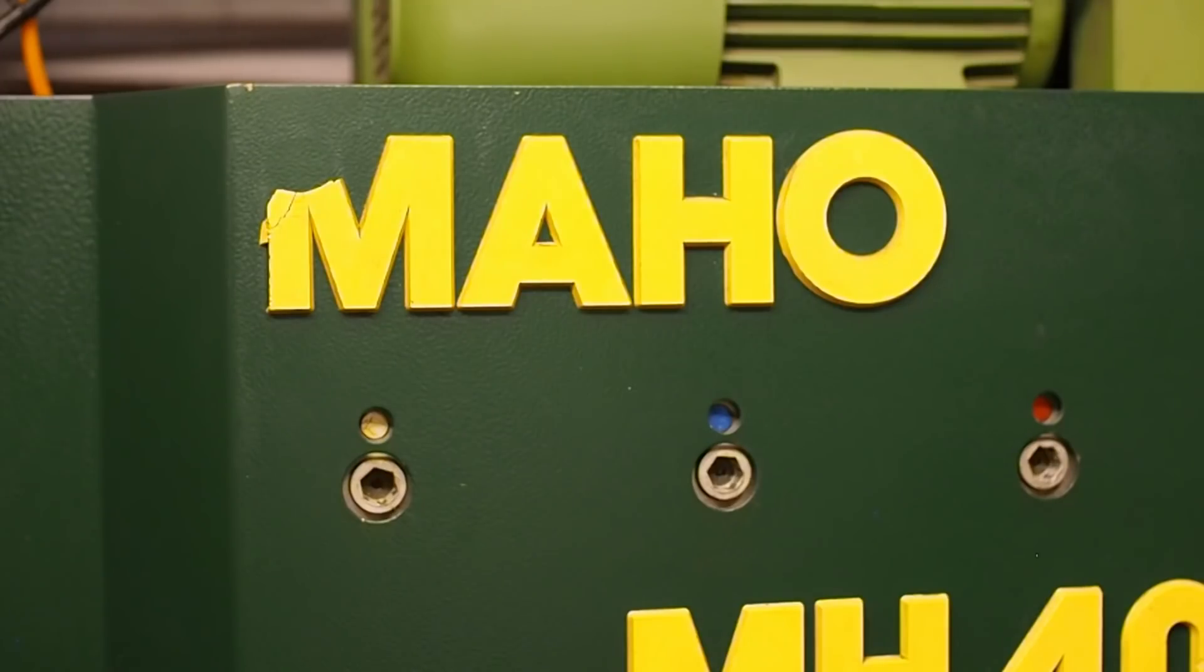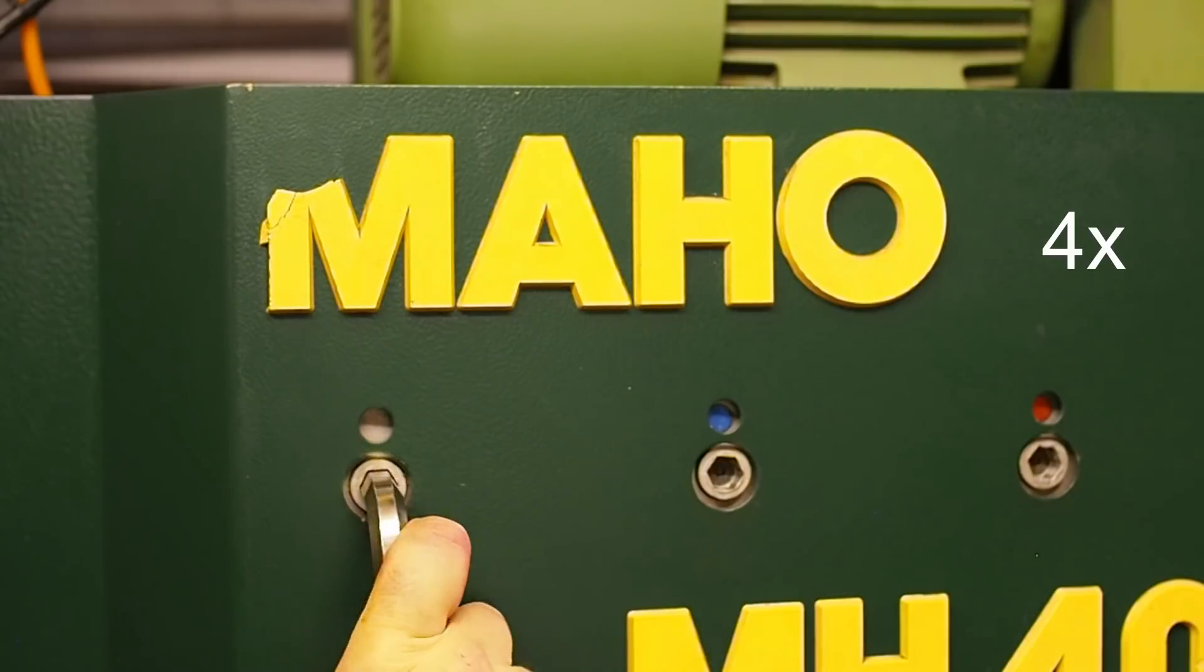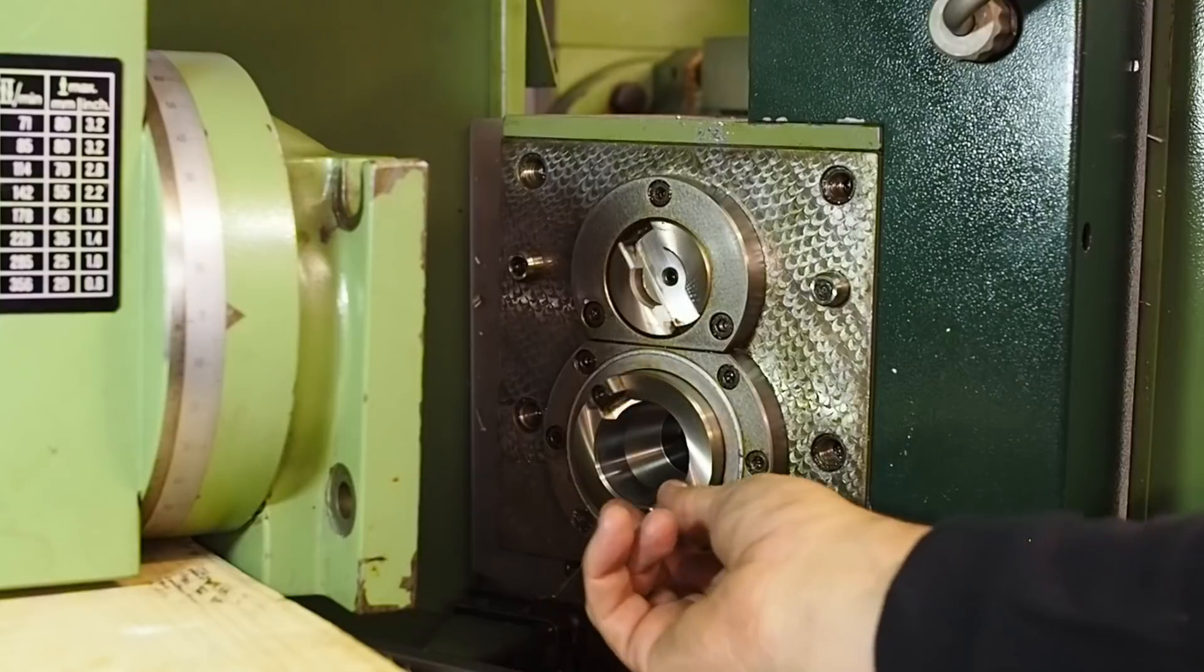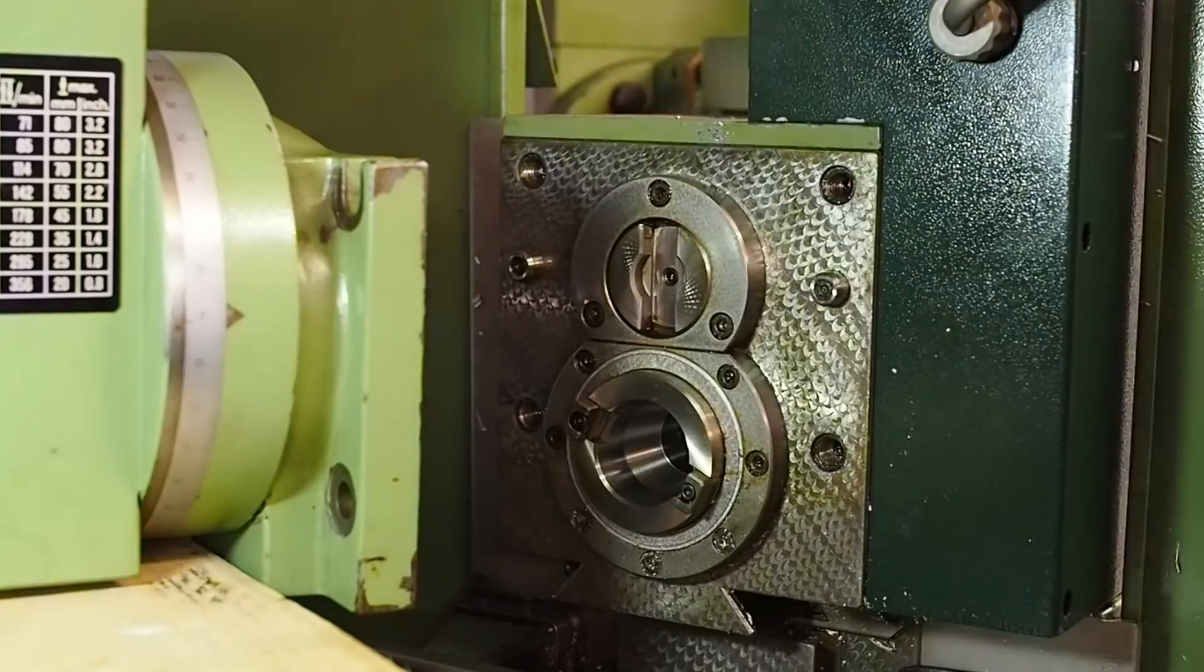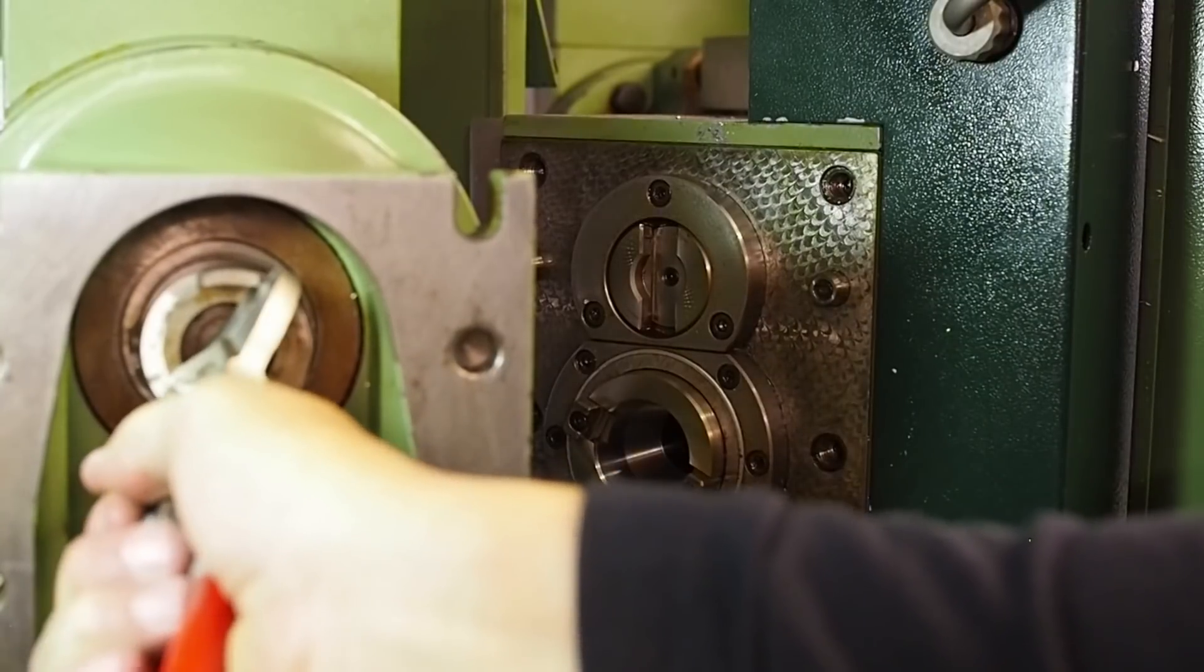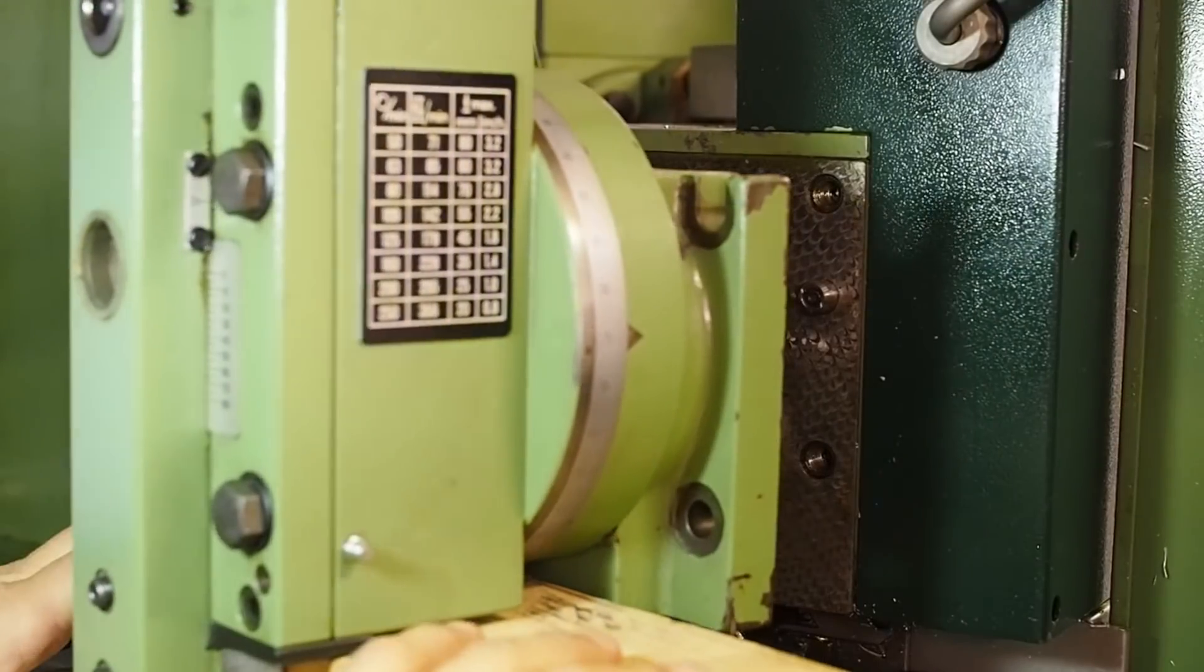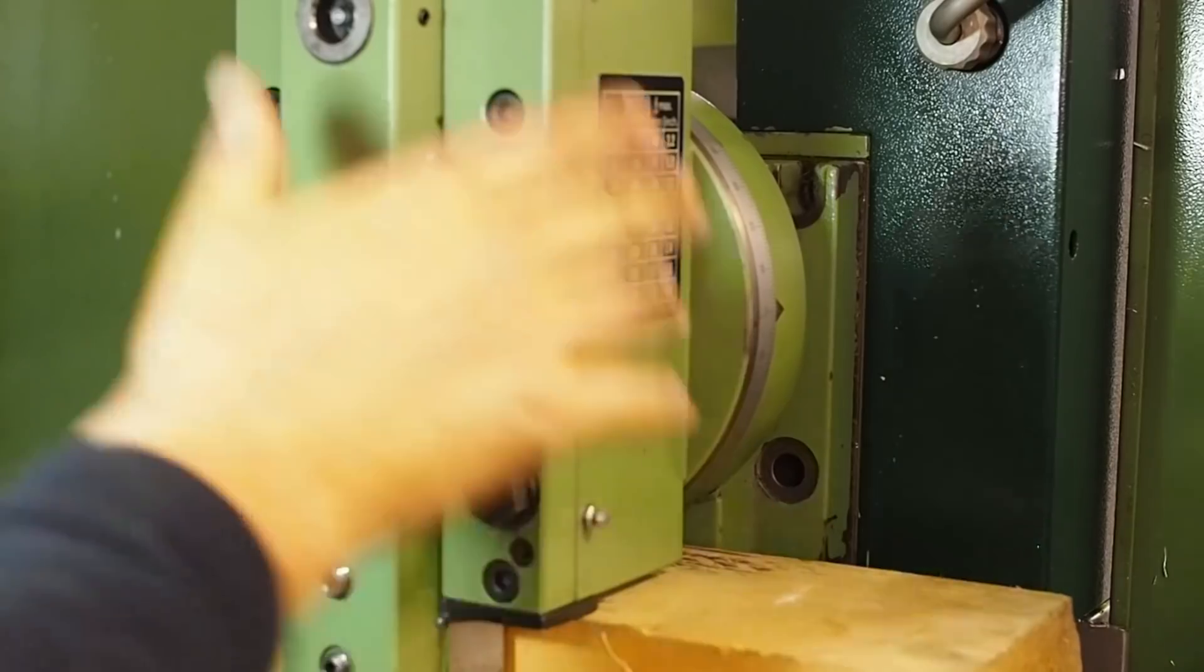Another thing which can help when trying to align these drive accessories is to put the gearbox into neutral. Because now you can easily rotate this, I'll put it in a vertical position which probably makes it easiest to line up.